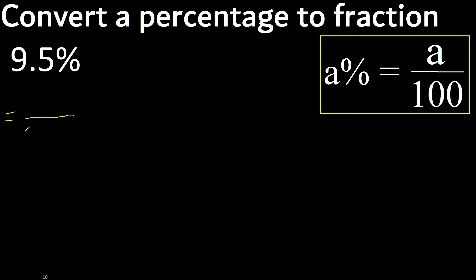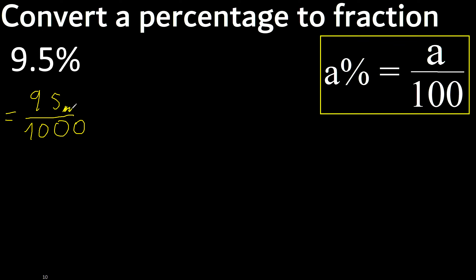Divided by 100. After the point: 1 digit gives 1, therefore 1 digit gives 10, 2 digits gives 100. Eliminate the point because there is no number after it, so we get 1000.